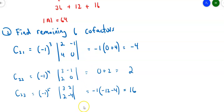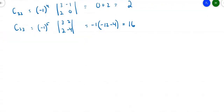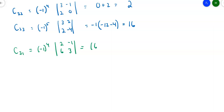Now we're done with row 2, one more row to go. C₃₁: (-1)^(3+1) = (-1)⁴ = 1. Knocking out row 3, column 1, you get the top-right numbers of the original matrix: [2, -1; 6, 3]. That gives me 1 times (6 minus (-6)) = 12. So C₃₁ = 12.